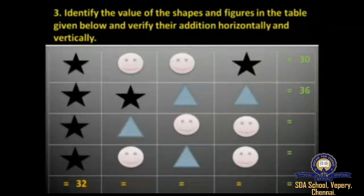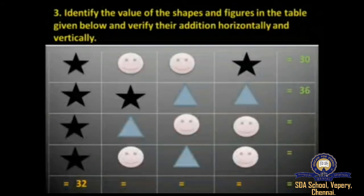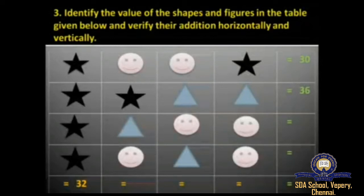Now for the second row: we know the value of a star is 8, and there are two stars, so 8 plus 8 is 16. The total for the second row is 36, so 36 minus 16 equals 20. There are two triangles in the second row, so we divide 20 by 2 to get 10. Therefore the value of a triangle is 10, and 8 + 8 + 10 + 10 = 36.